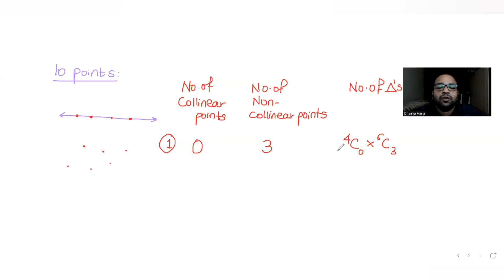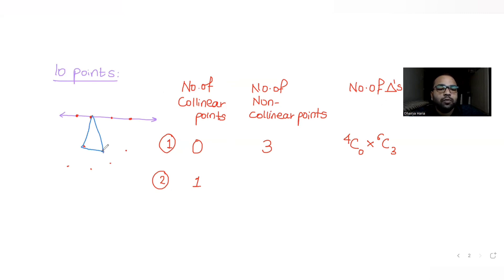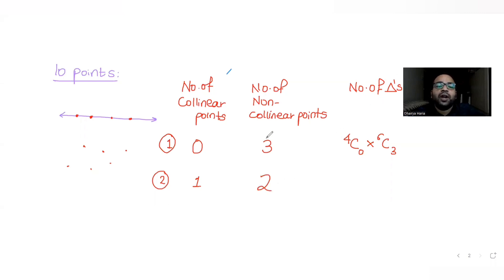Case 2: Select 1 collinear point and 2 non-collinear points. If we pick one collinear point and two non-collinear points, we can still form a valid triangle. The number of ways to do this is 4C1 × 6C2 — selecting one from the four collinear points and two from the six non-collinear points.